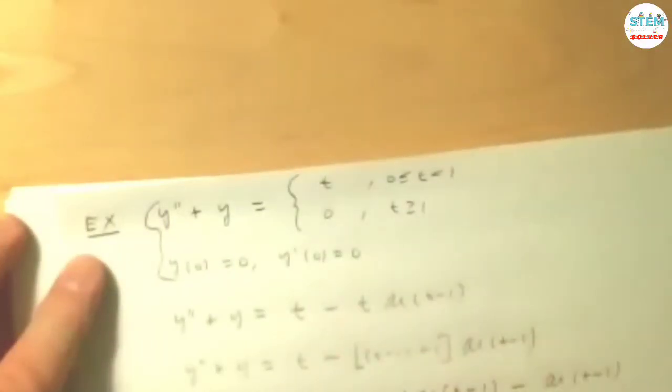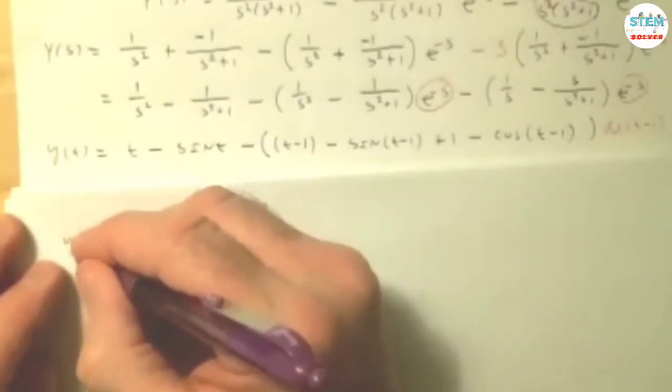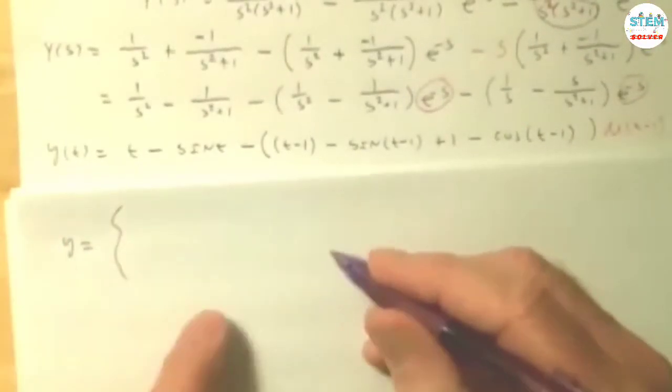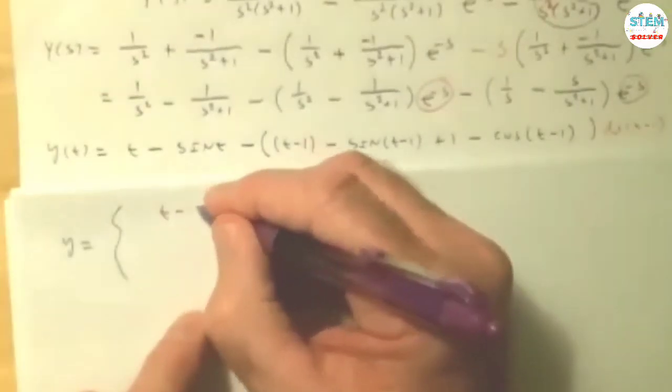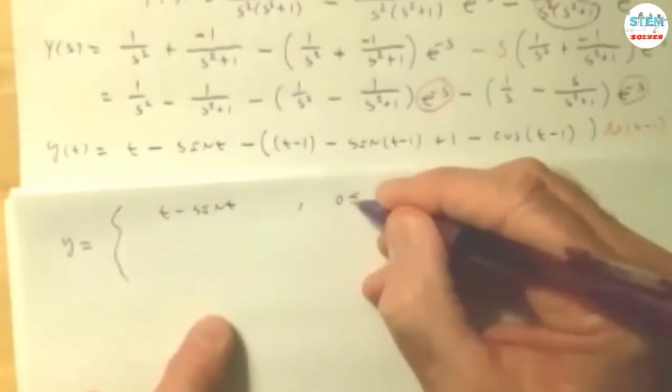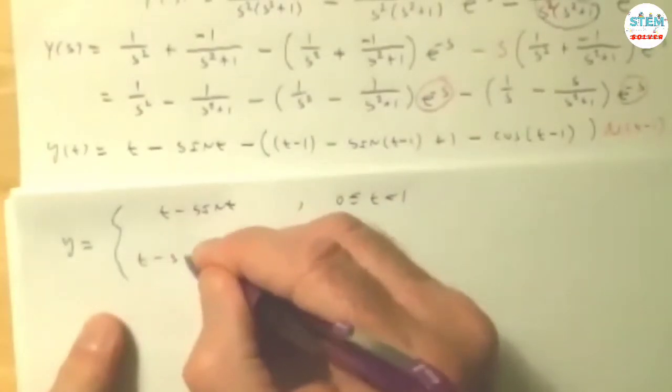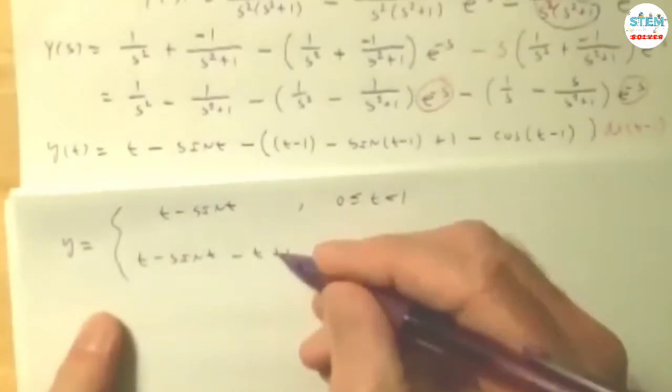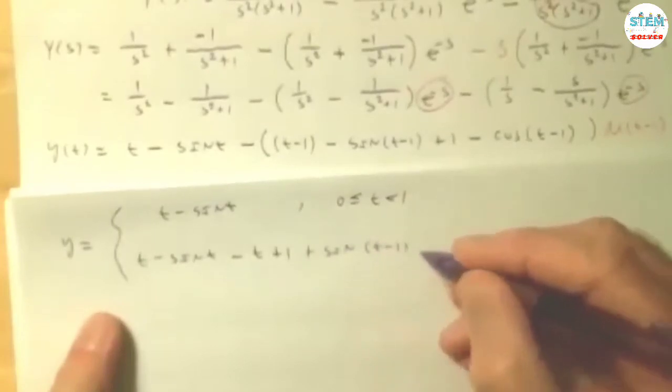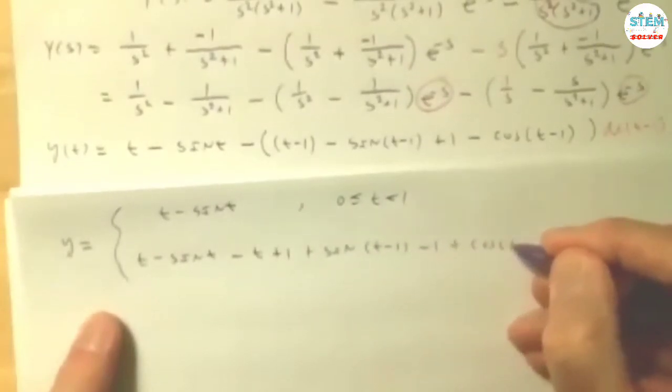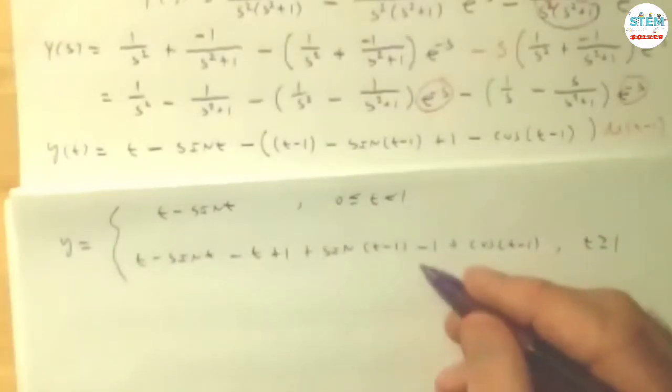But what you would actually do, and you don't have to go this far, realize that your original differential equation was piecewise. Between 0 and 1, you had something, greater than 1 you had something else. I'm going to do the same thing here. This is actually a piecewise function. Before 1, this whole thing is turned off. You actually just have t minus sine t. That's your answer when t is between 0 and 1. Now when it's 1, this whole thing turns on. So what you actually have is t minus sine t minus t plus 1, distributing now, plus sine of t minus 1 minus 1 plus cosine of t minus 1. This occurs when t is greater than or equal to 1. You simplify it a bit of course. The t's will drop out.